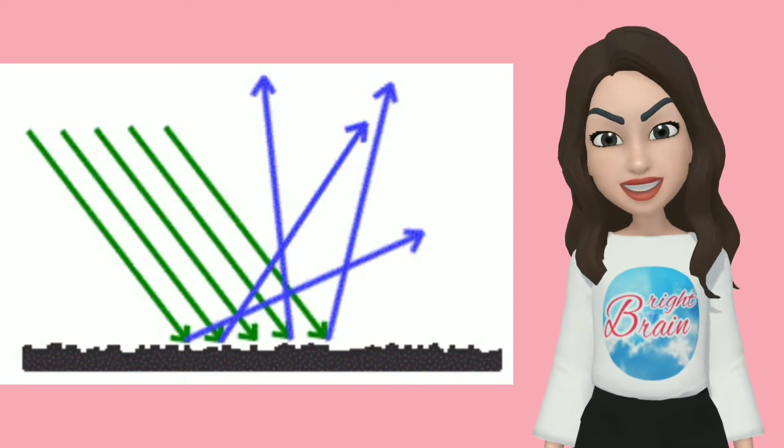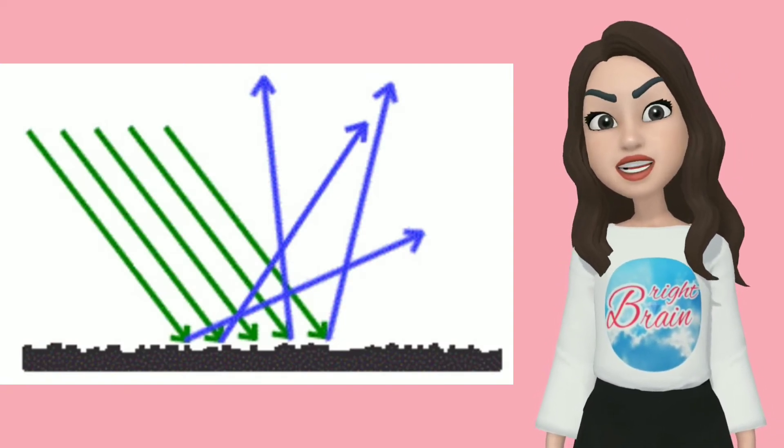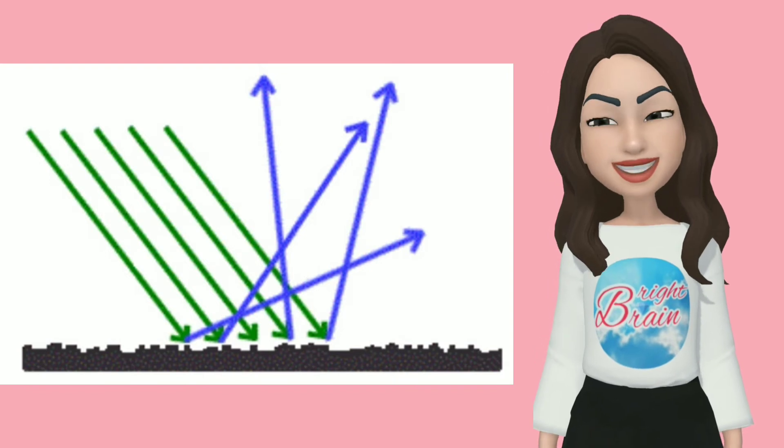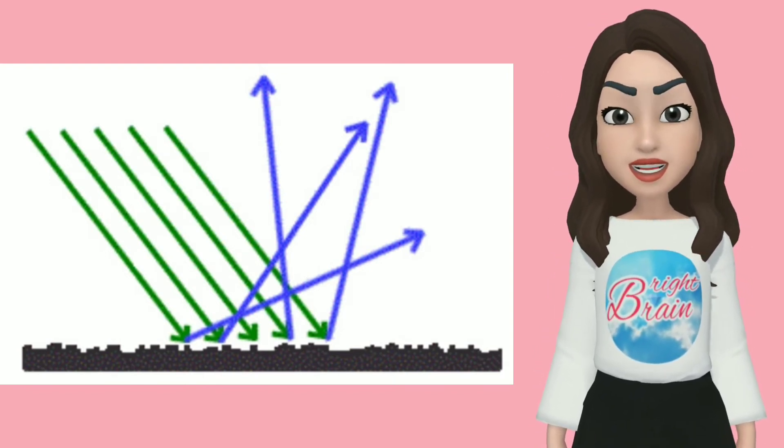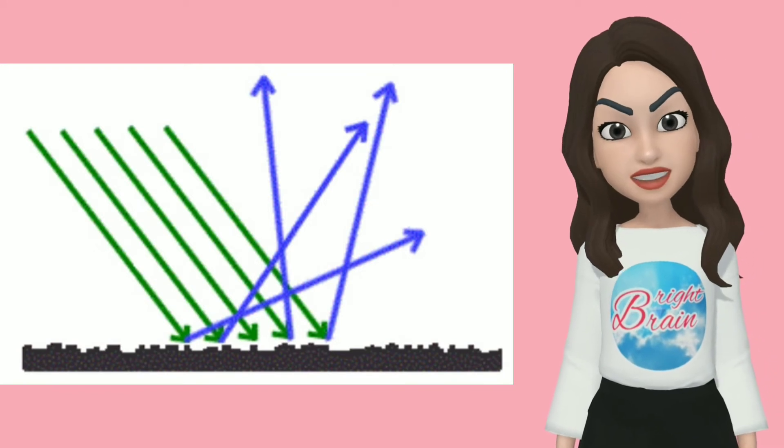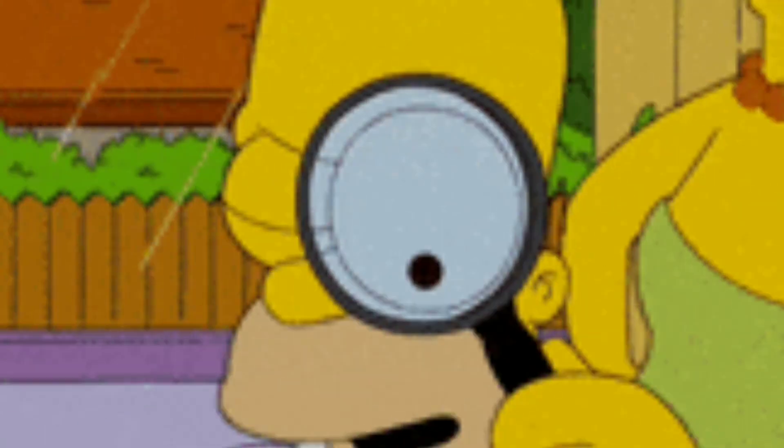Diffuse reflection is done by rough surfaces, where parallel lights are reflected in various directions. This is the most common one, because every object we see is using diffuse reflection.